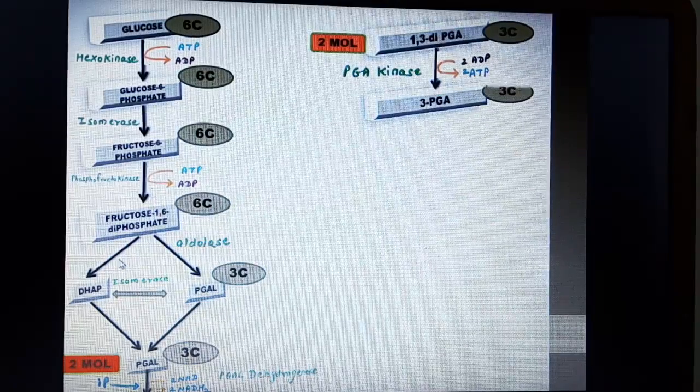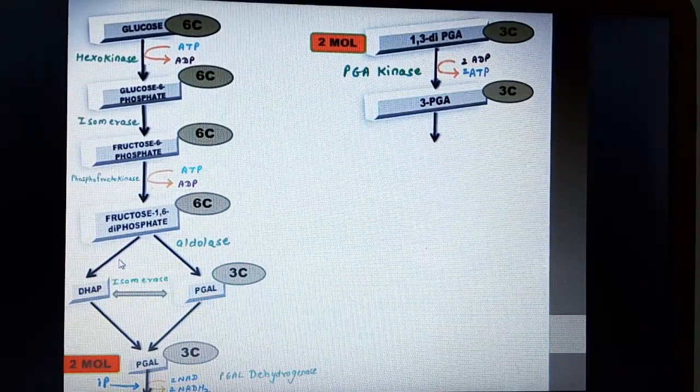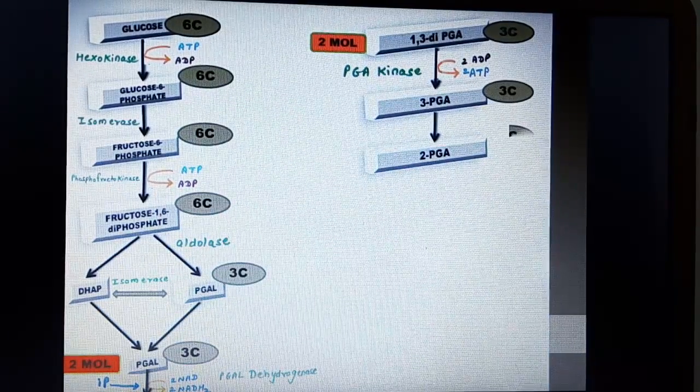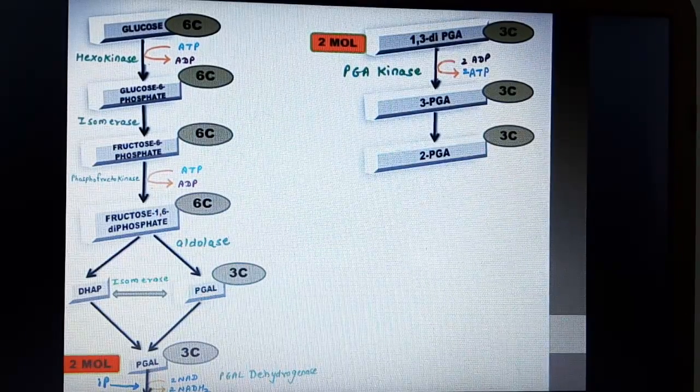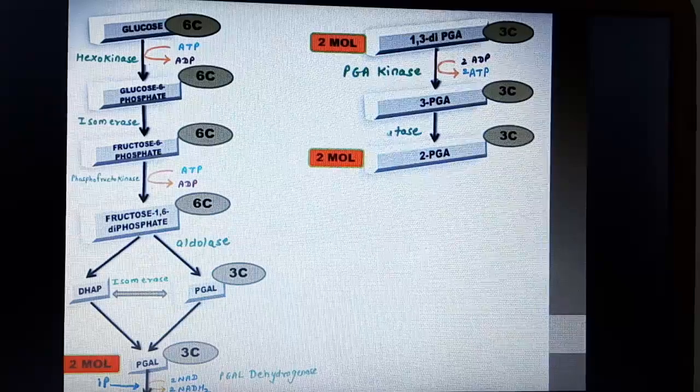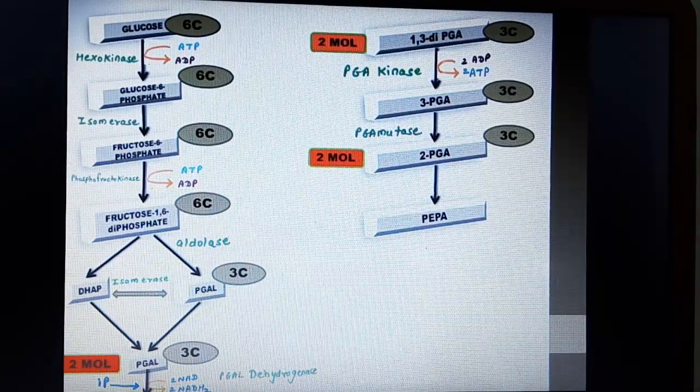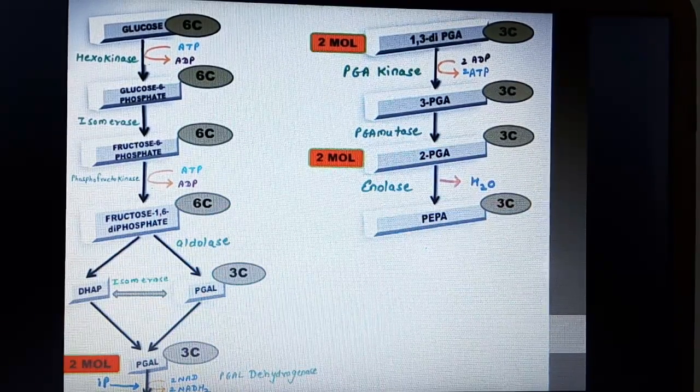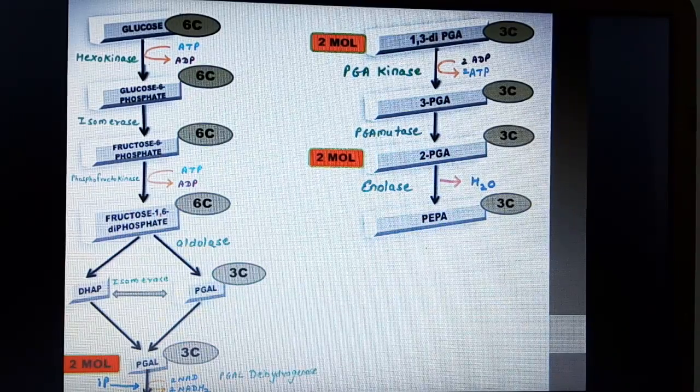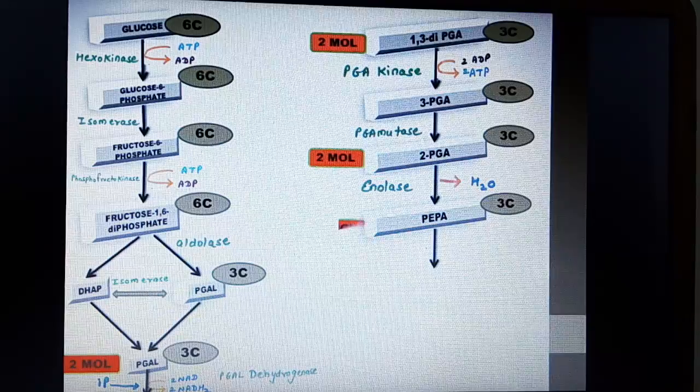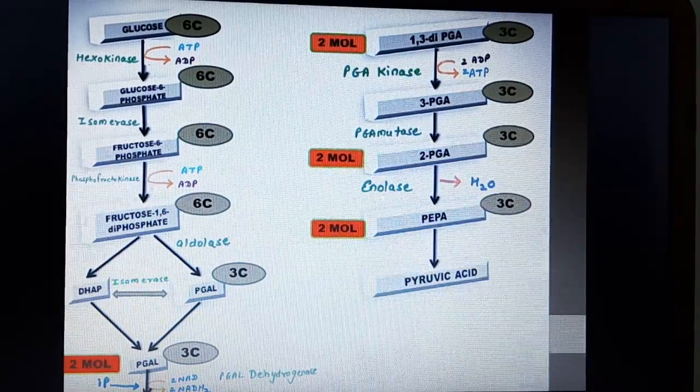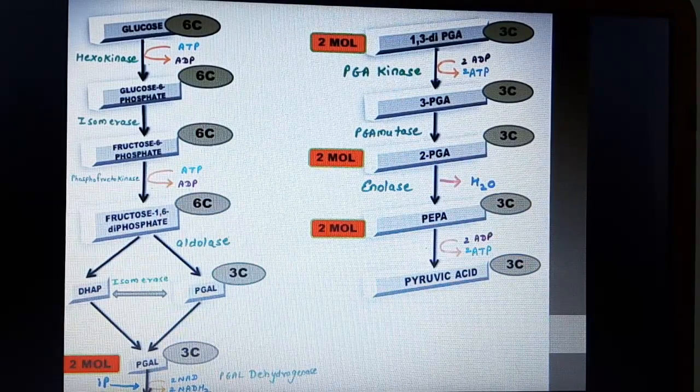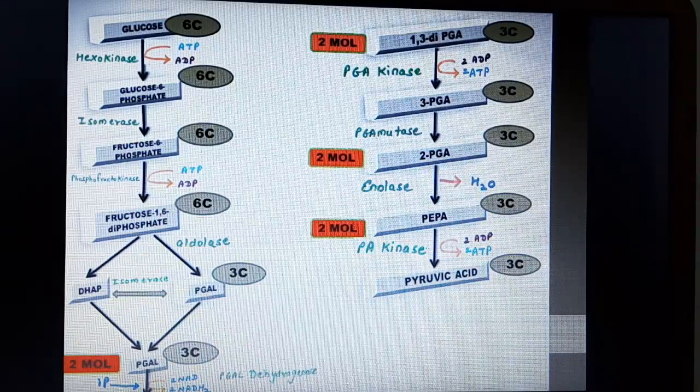3 PGA undergoes isomerization and it forms 2 PGA. It simply means that the phosphate group is shifting from third carbon to the second carbon which is also 3 carbon compound in the presence of enzyme PGA mutase. Now this 2 PGA undergoes dehydration means it loses out water molecule and it forms PEPA in the presence of enzyme enolase. What is PEPA? Phosphoenol pyruvic acid. Phosphoenol pyruvic acid undergoes dephosphorylation. It means it loses out the phosphate group and it forms pyruvic acid. So in this way it takes place in the presence of enzyme pyruvate kinase.